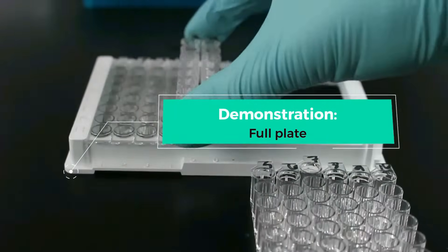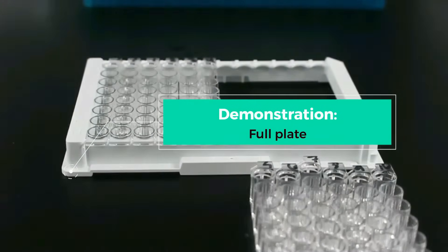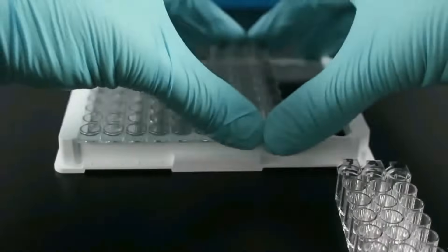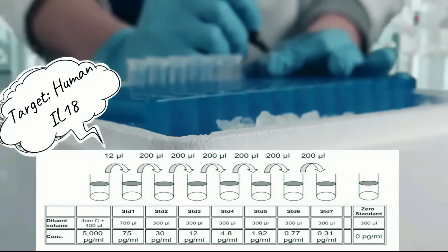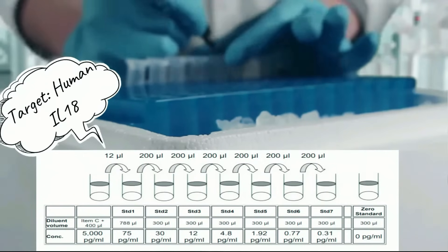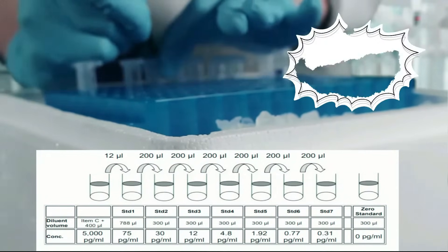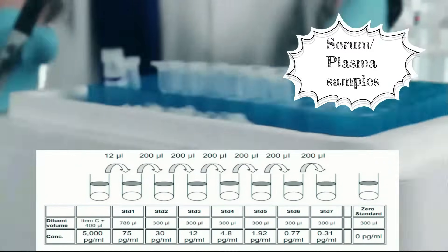For demonstration purposes, we are going to show a full plate. For human IL-18, we constitute the standard at 5000 pg per ml. We will then dilute the sample so the top concentration is 75 pg per ml. Next, carry out a 2.5 dilution all the way until standard 7, so the bottom concentration is 0.31 pg per ml. We will also include a zero or blank as a control.